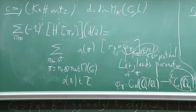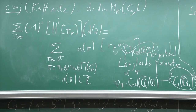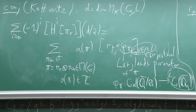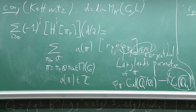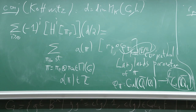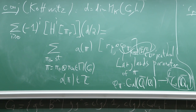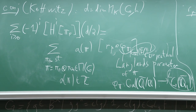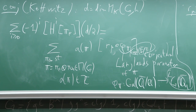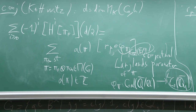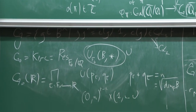When we say we check the Kottwitz conjecture: φ_π is conjectural, but the global Langlands correspondence should be compatible with the local Langlands correspondences. At unramified places, the local Langlands correspondence is just the Satake isomorphism. If I restrict φ_π to a local Galois group at an unramified place, I know exactly what I should get — it's given by the Satake parameters of π. So I get a very precise conjecture that can be checked, and Kottwitz has checked it in many cases.